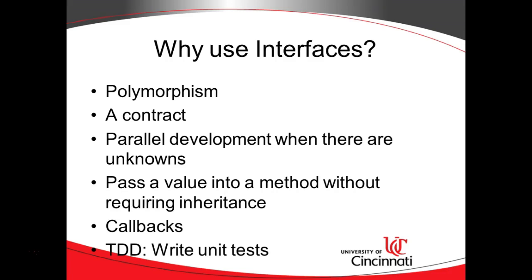Another thing we can do with interfaces: if a class implements an interface, it can be passed into a method signature where that method has a parameter variable of that interface type. We use this frequently in Android for callbacks. For example, I want to connect to a location listener or a GPS service. Once it's connected, it will call me back and say it's ready to start delivering location information. That's a callback — we request some behavior, it takes some time, and when finished, the external process calls us back. Interfaces are used for this quite a bit in Android.